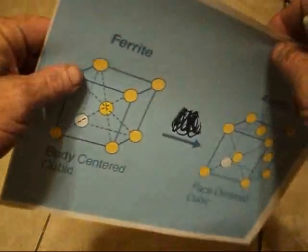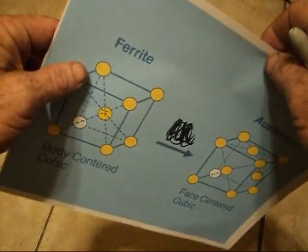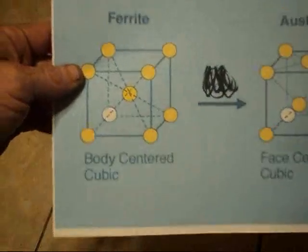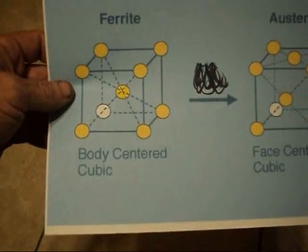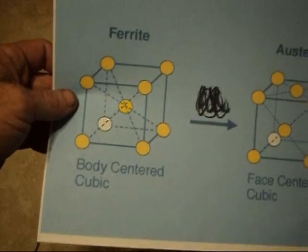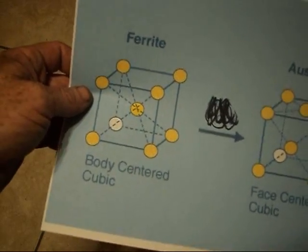I printed out a couple of charts so maybe you can get kind of a basic idea. Iron, you know, is a mixture of—I mean, steel is a mixture of iron and carbon.